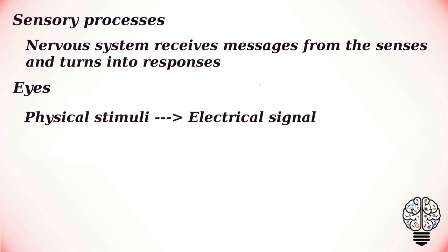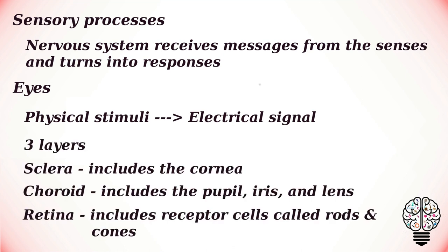In the human visual system, the eye receives physical stimuli in the form of light and sends those stimuli as electrical signals to the brain, which interprets the signals as images. The eye has three main layers: the sclera, which includes the cornea; the choroid, which includes the pupil, iris and lens; and the retina, which includes receptor cells called rods and cones.